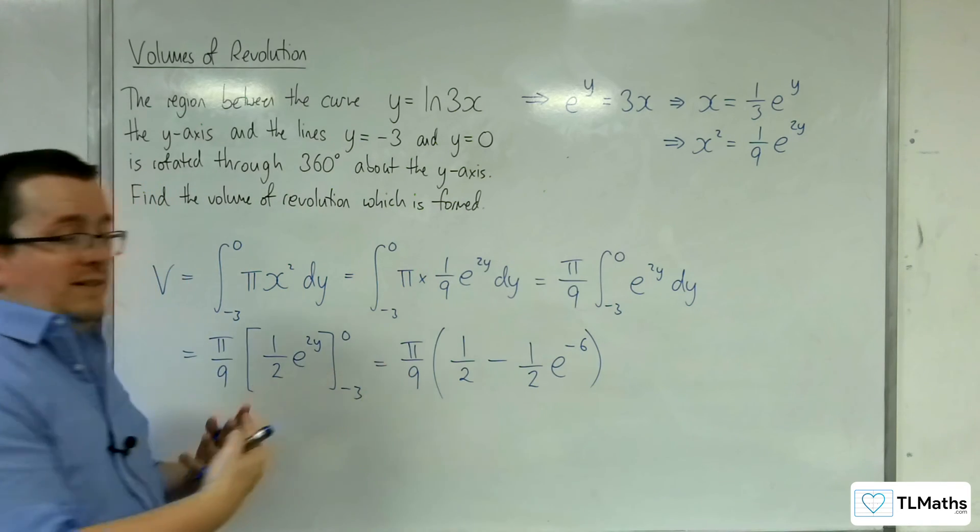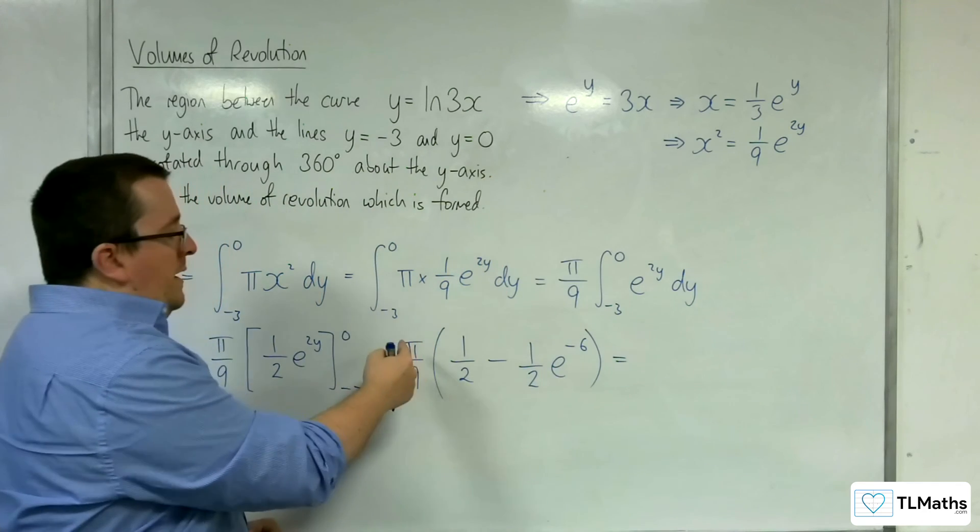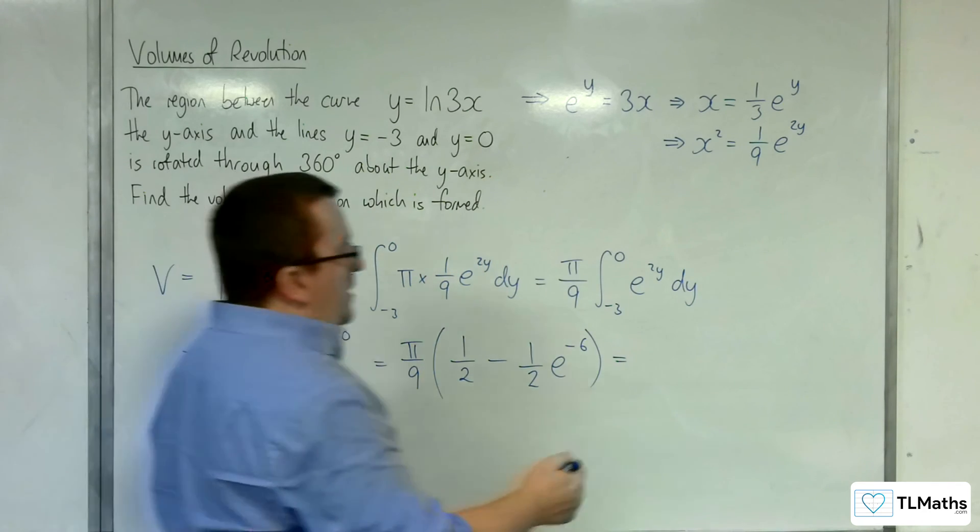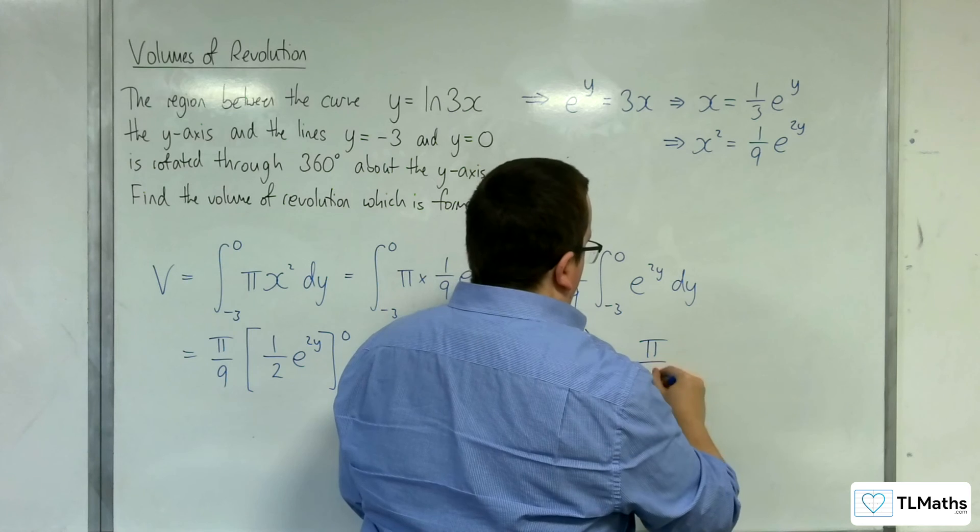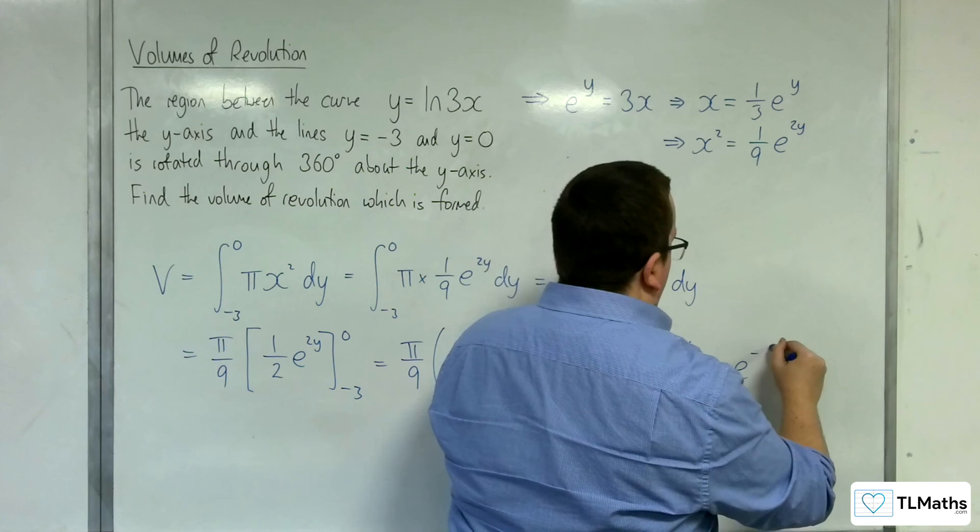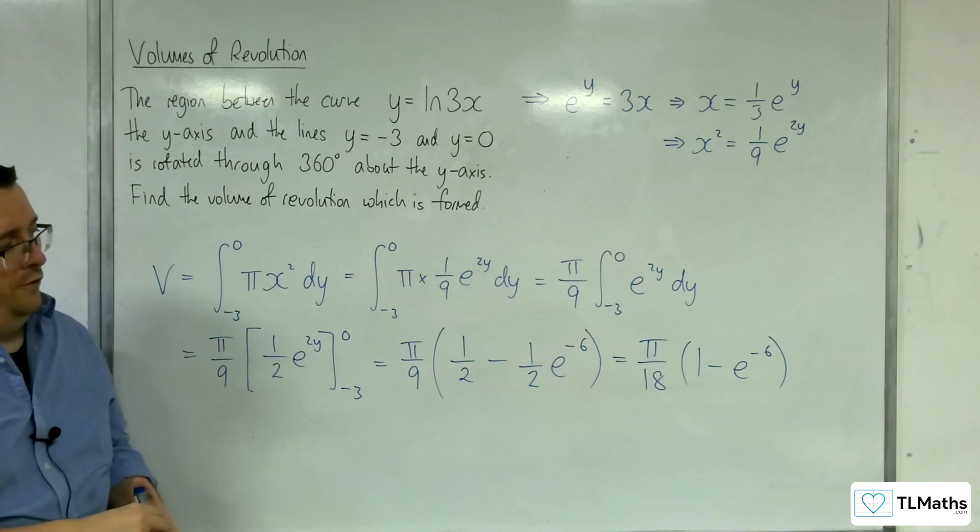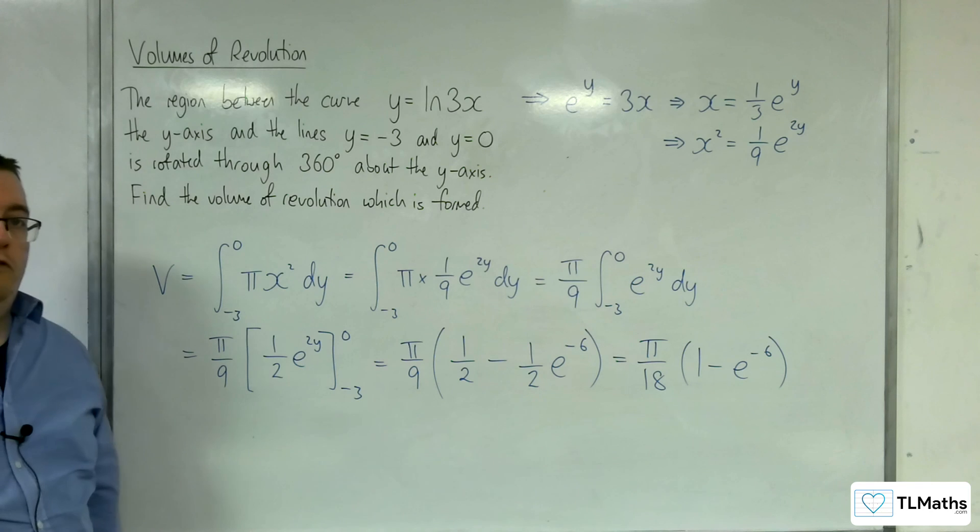So I can factor that half out to make this neater. So I'd have pi over 9 times 1 half, which is pi over 18. And then I would have 1 take away e to the minus 6. And this is the exact value of the volume of revolution formed.